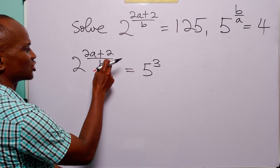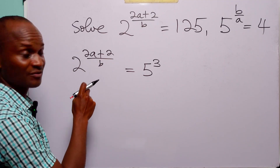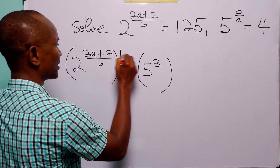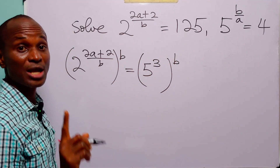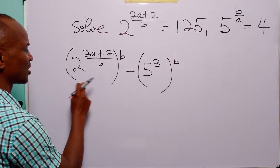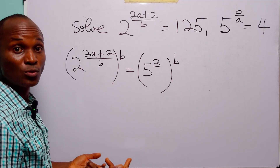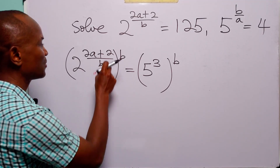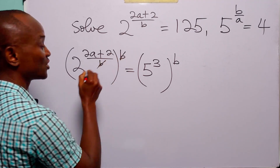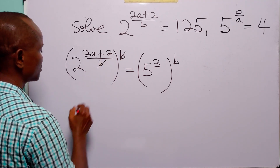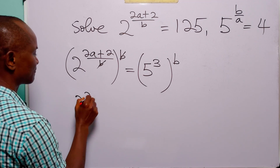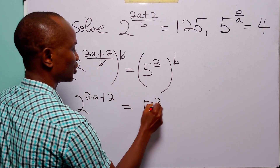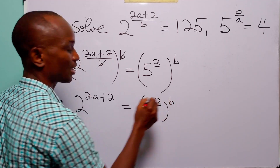To get rid of the fraction in the exponent on the left-hand side, let us raise both sides of this equation to the power B. When we multiply the exponents, B cancels, leaving us with 2 to the power (2A + 2) is equal to 5 cubed to the power B.